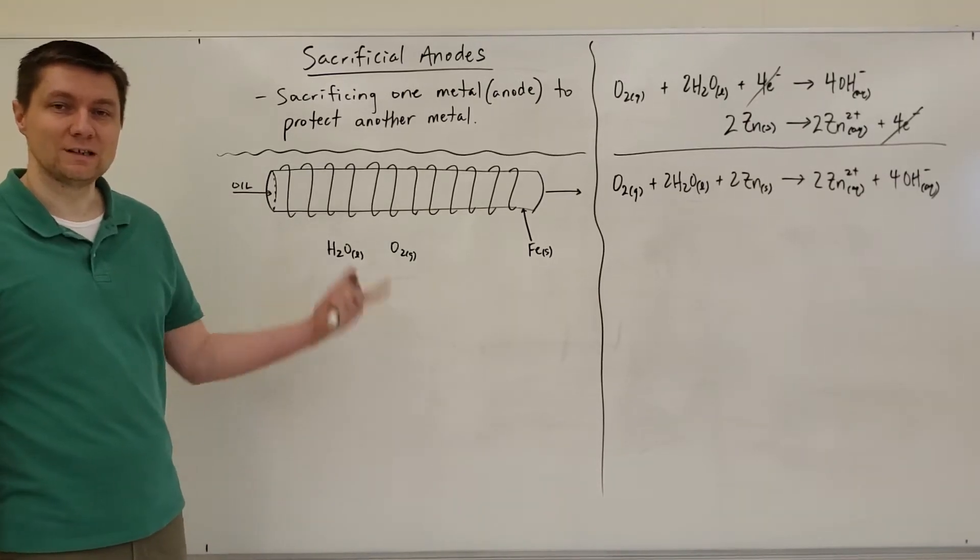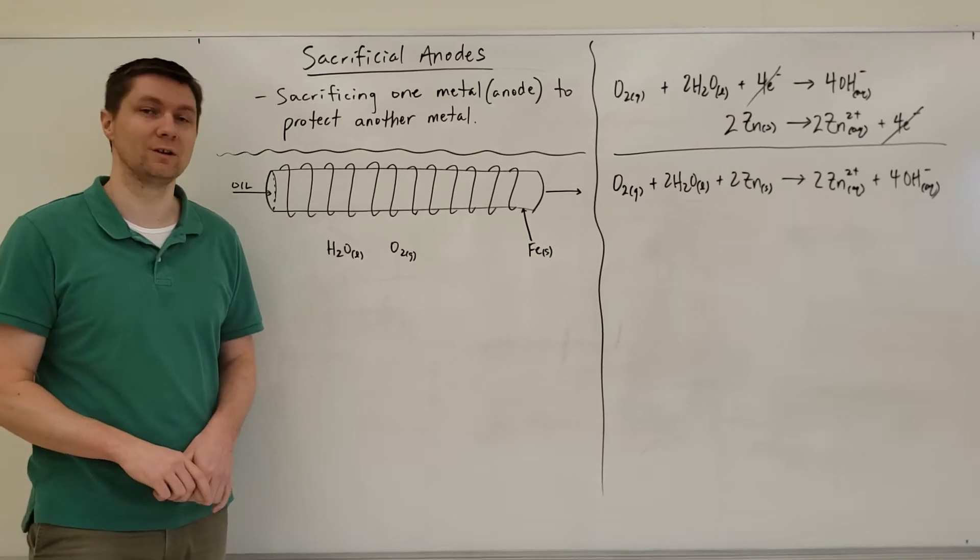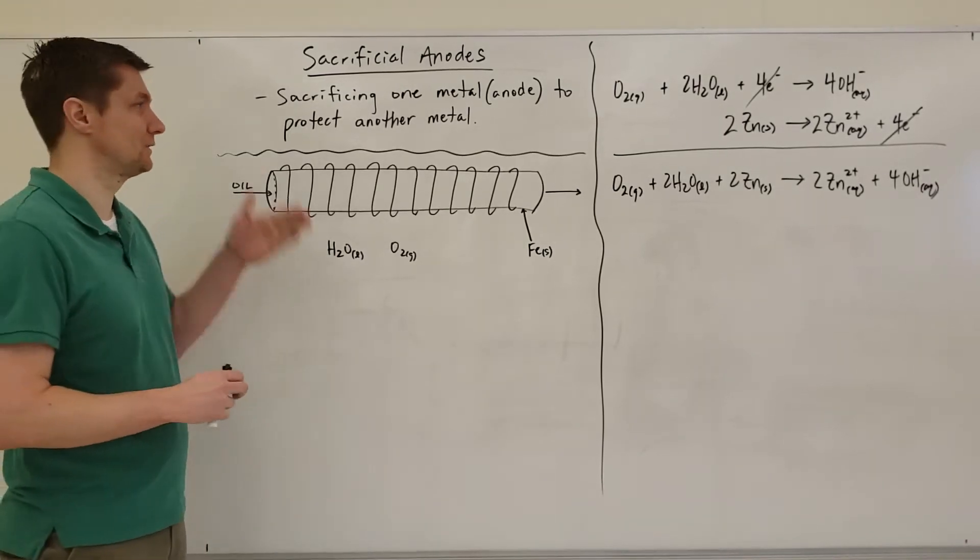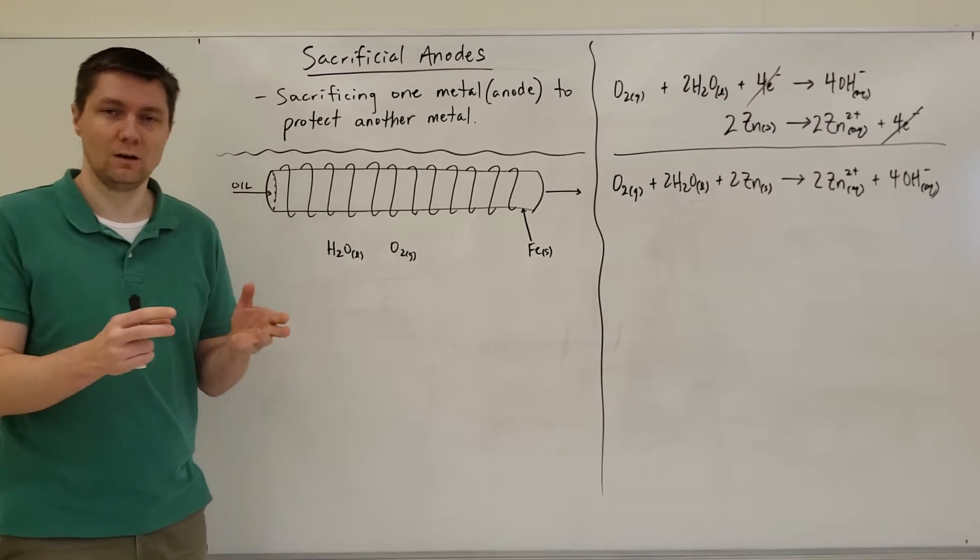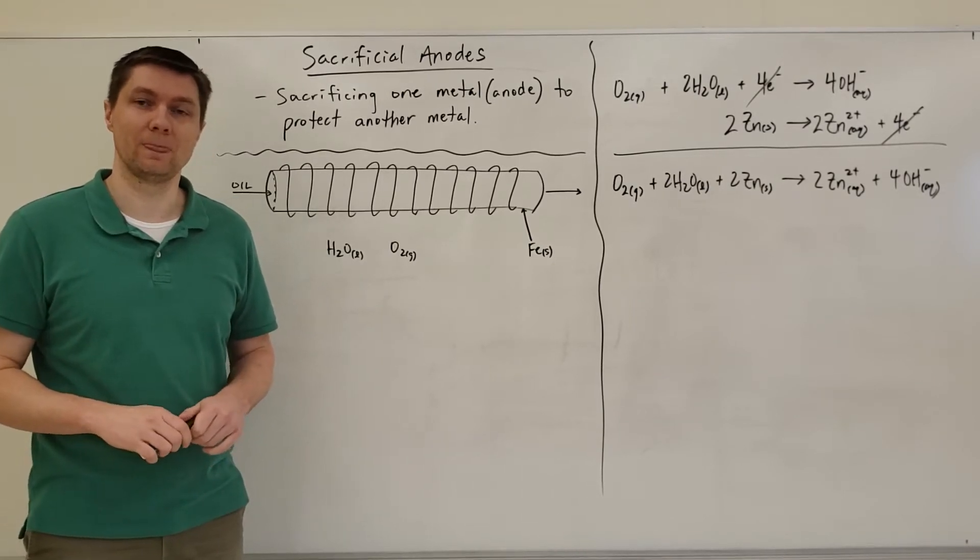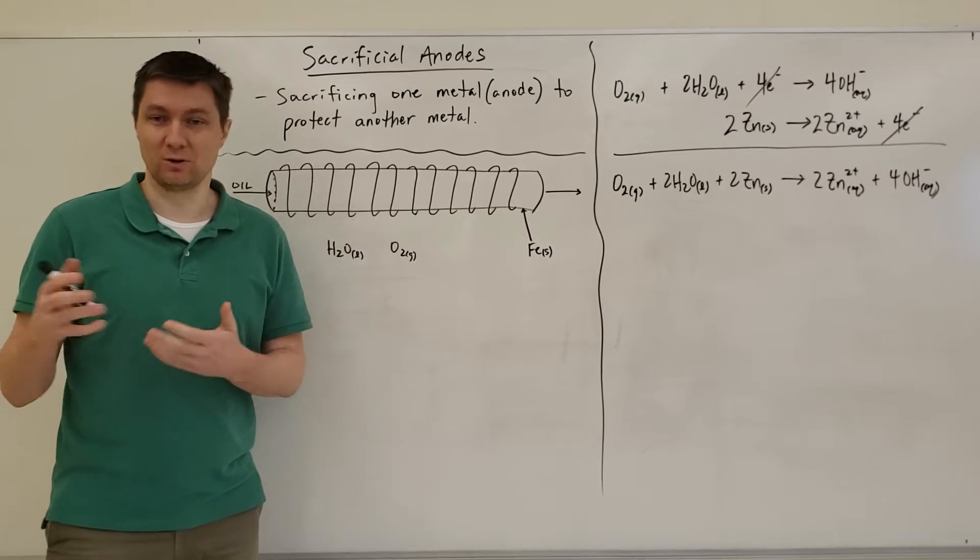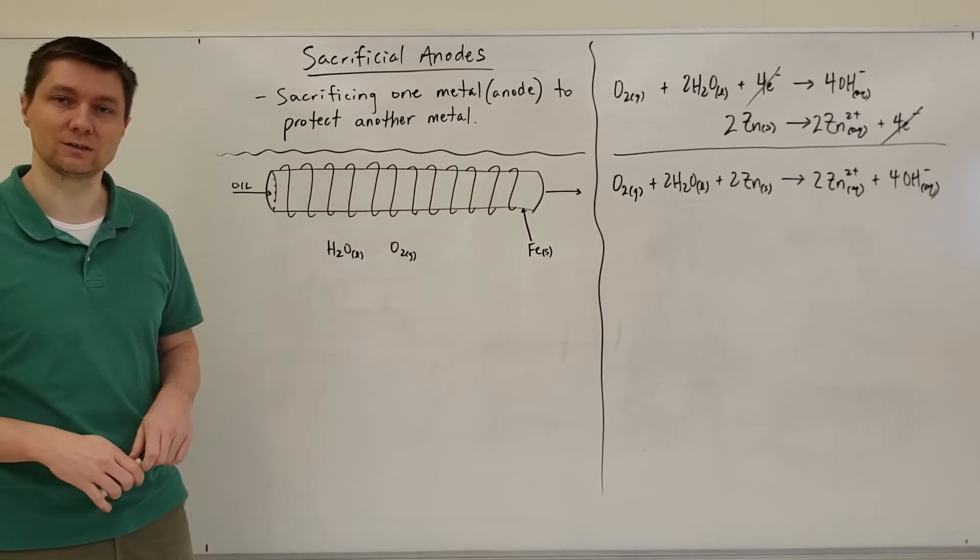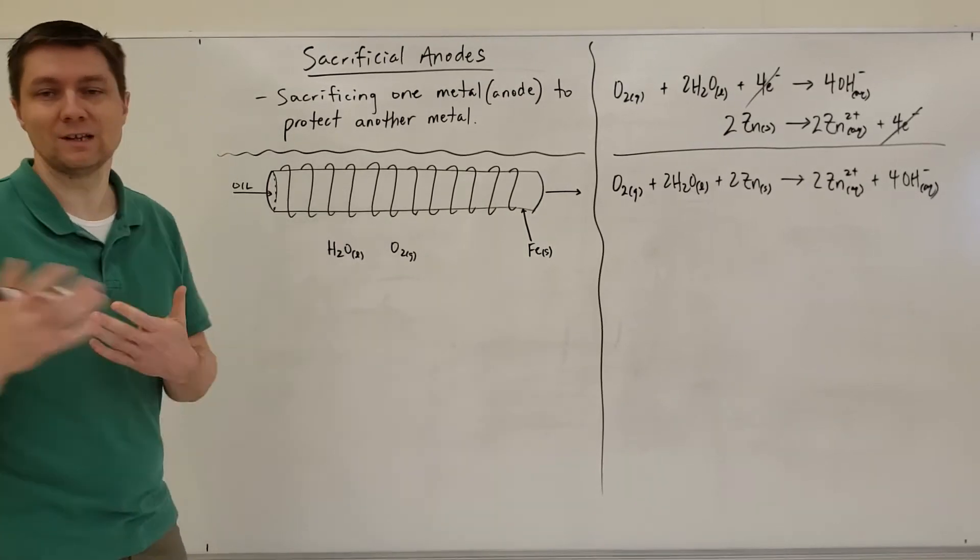Hey everybody, so sacrificial anodes is the last concept in the redox unit that we need to cover. All this really means is that you're sacrificing one metal, which is the anode in a particular electrochemical cell or redox reaction, to protect another metal that you don't want to spontaneously react with the oxidizing agent.